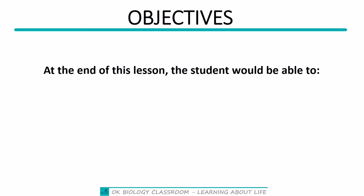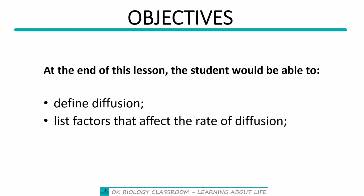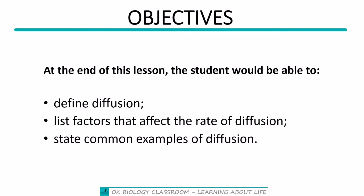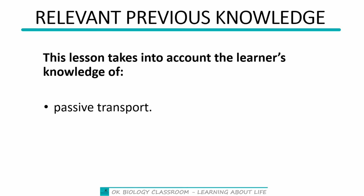For the objectives, at the end of this lesson, the student would be able to define diffusion, list factors that affect the rate of diffusion, and state common examples of diffusion. It's very important to have knowledge about passive transport from our previous lesson, so please watch that before proceeding.